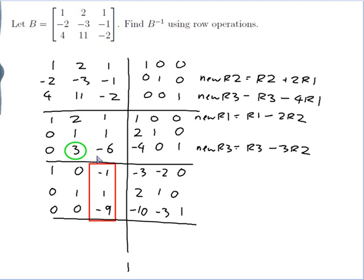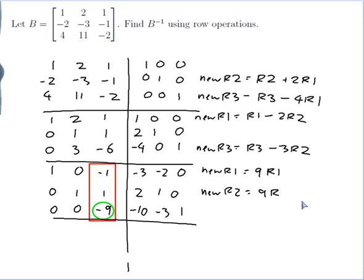I would like the third column of the identity, which means I want a 1 in this spot. I can't swap rows to get a 1 there because that would destroy the columns of the identity I already have. I would have to divide by minus 9, but that gives horrible fractions. So I'm not going to divide by minus 9 — instead I'll multiply the other rows by 9. My new row 1 is 9 times my old row 1, my new row 2 is 9 times my old row 2, and just to get rid of the negative, my new row 3 is minus my old row 3.